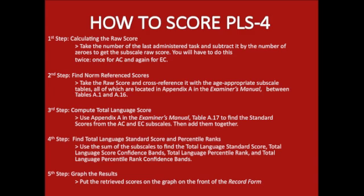The fourth step is to find the total language standard score and percentile ranks: use the sum of the subscales to find the total language standard score, total language score confidence bands, total language percentile rank, and total language percentile rank confidence bands. The fifth step is to graph the results by placing the retrieved scores on the graph on the front of the record form.